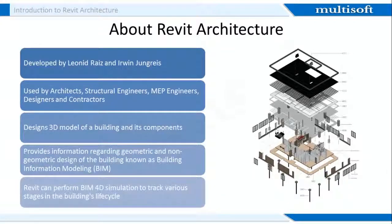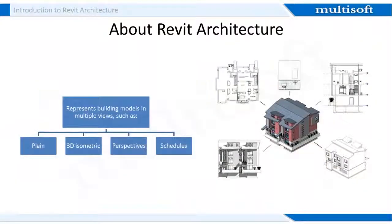Revit can perform BIM 4D simulation and has tools to plan and track various stages in the building's life cycle, from concept to construction and finally to demolition. The Revit Architecture software can represent the building model in multiple views, such as plan, 3D isometric, perspectives, and schedules.